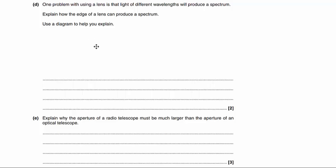Part D. One problem with using a lens is that light of different wavelengths will produce a spectrum. Explain how the edge of a lens can produce a spectrum. So it says to use a diagram to help you explain, and that's probably the easiest way of answering this question. So if we imagine our lens looks like this in cross section, then one edge of it is something like that, which is a very similar shape to a prism.